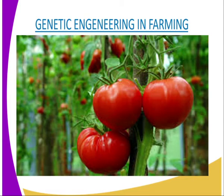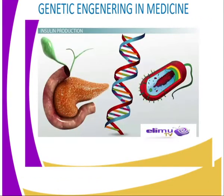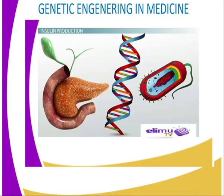Now we are going to look at our second application of genetic engineering, which is medicine. Various substances are being produced by genetically modified organisms. A strain of Escherichia coli has been engineered to synthesize human insulin, as seen from our diagrammatic representation. The human gene that codes for insulin is transferred into the bacteria, thereby producing insulin that is purer and in large quantities. Previously, insulin was extracted from cows and pigs and was not pure, and such impurities caused many allergies and other disorders. Human somatotrophic hormone for treatment of dwarfism is now extracted from a genetically modified strain of Escherichia coli.